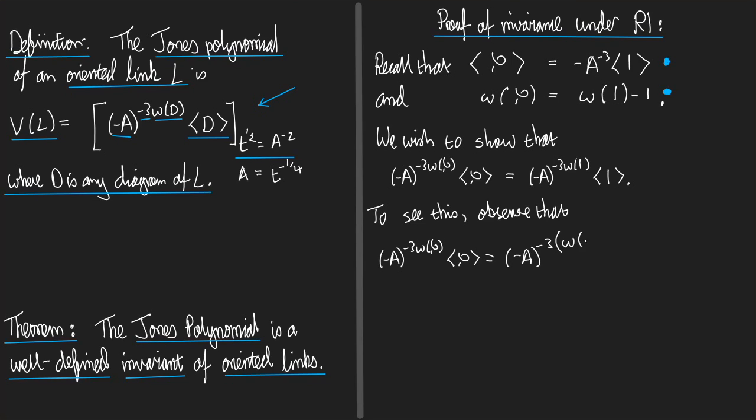And what is the Kauffman bracket of a diagram that has a part that looks like the left-hand side of Reidemeister-move-1? Well, that's minus A to the minus 3. Let's put that all in a bracket to make it clear that we're multiplying, times the diagram with R1 applied.